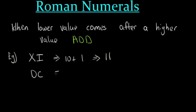Likewise, if we had DC, we know that D is 500, and C is 100, so DC is 600.